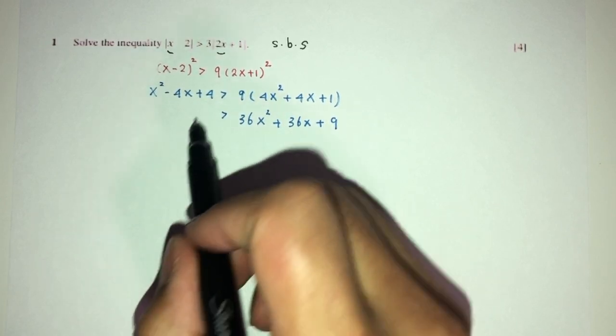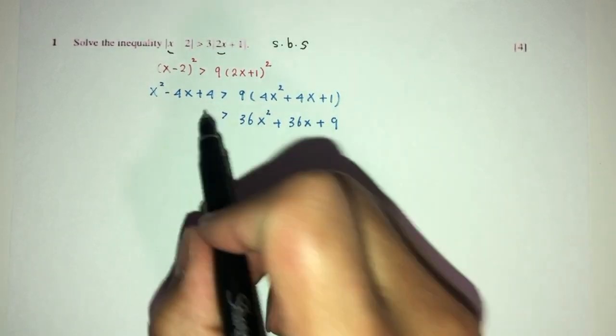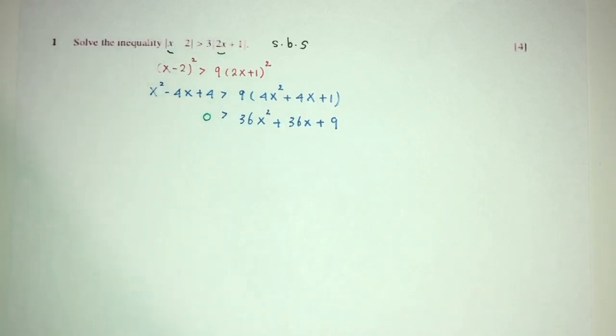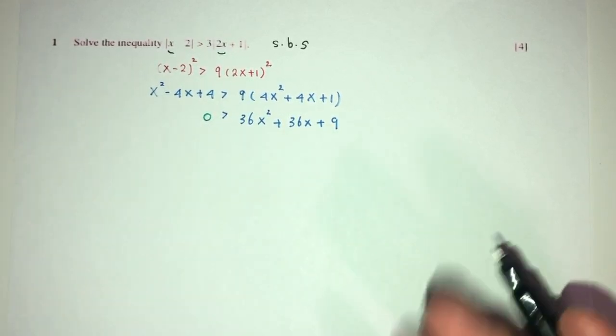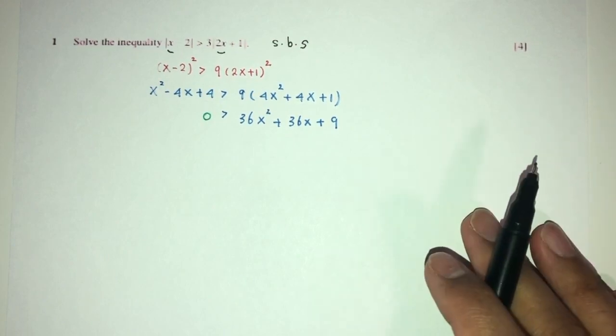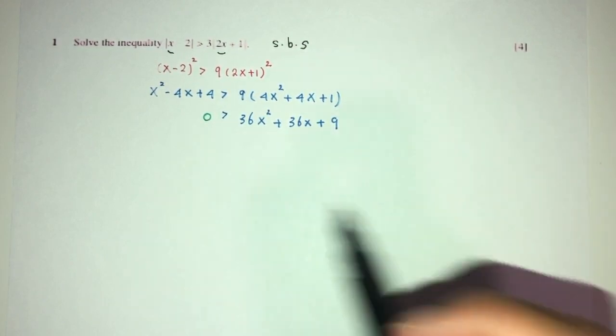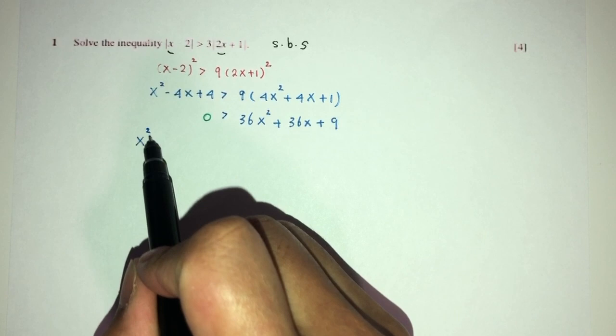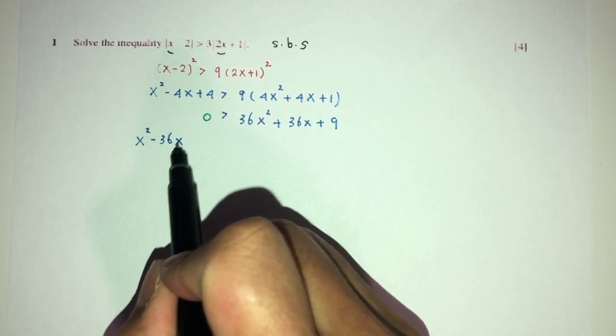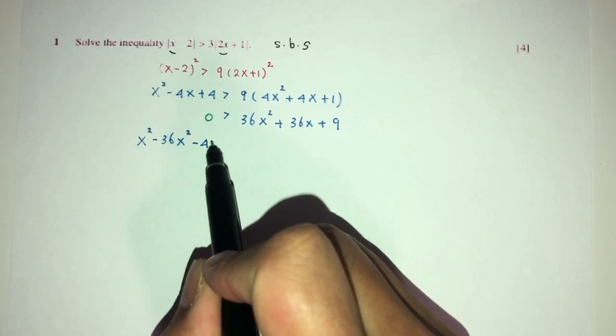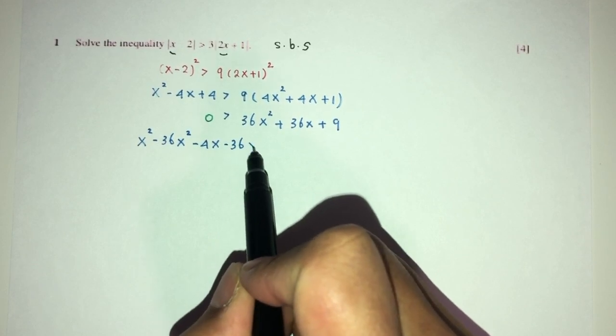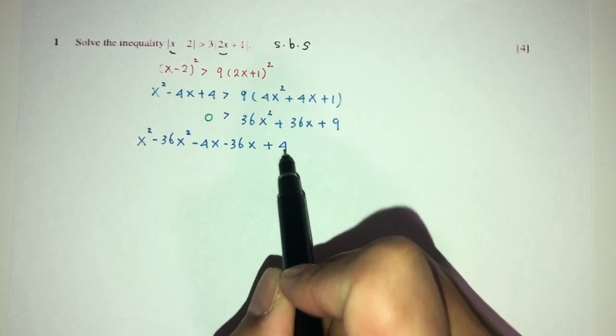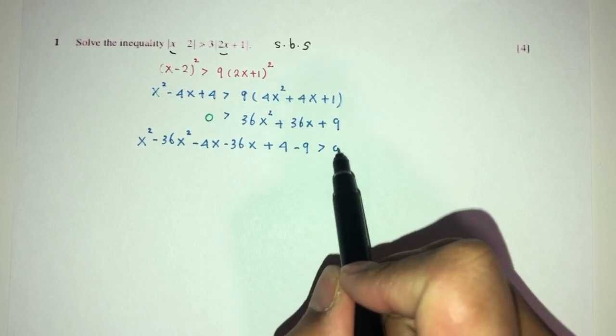For example, let me send all these to this side. Or maybe that will confuse you. Let me send everything to this side as usual. I don't want to confuse you guys. You will have x² - 36x² - 4x - 36x + 4 and then we have minus 9 is more than 0.